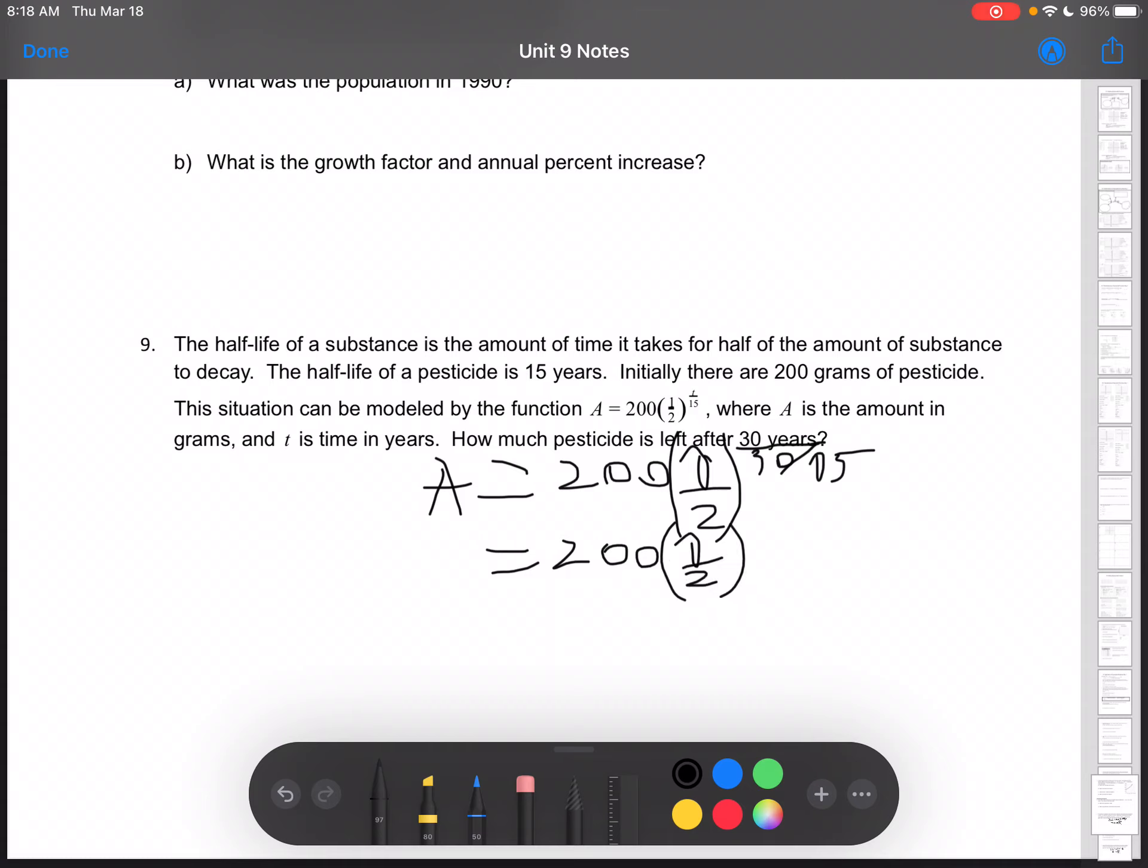30 divided by 15 is 2, and 200 times one-half to the power of 2 equals 50 grams.